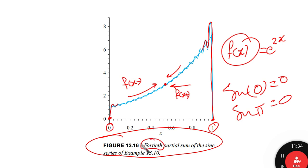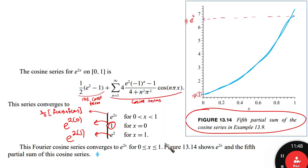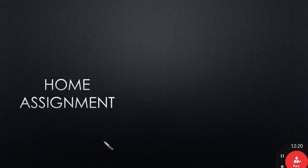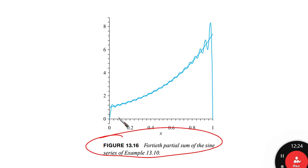After 14 terms — meaning 40 terms — the Fourier series succeeds in almost matching the original function. Comparing with the cosine example from the previous video, only five terms gave a very smooth function. This means the Fourier cosine series can represent the function quite accurately with fewer terms compared to the Fourier sine series.